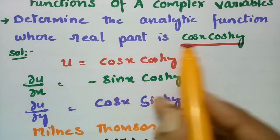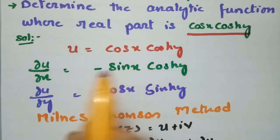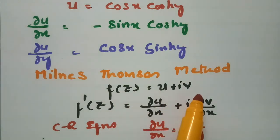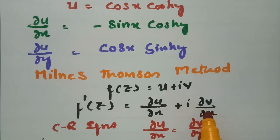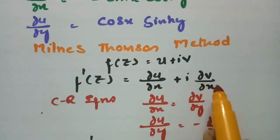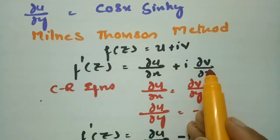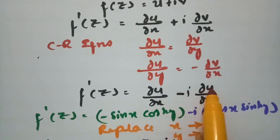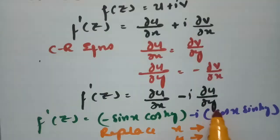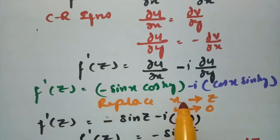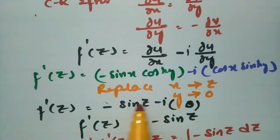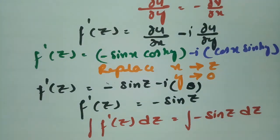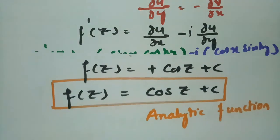To summarize: given the real part u = cos(x)·cosh(y), take derivatives with respect to x and y. Using the Milne-Thompson method, write f'(z) = ∂u/∂x - i·∂u/∂y, substituting the computed partial derivatives. Replace x by z and y by 0, giving f'(z) = -sin(z). Integrating both sides with respect to z gives f(z) = cos(z), which is the required analytic function.